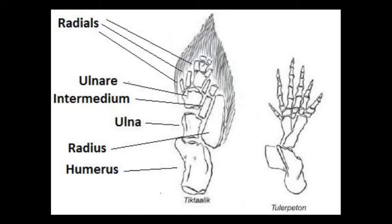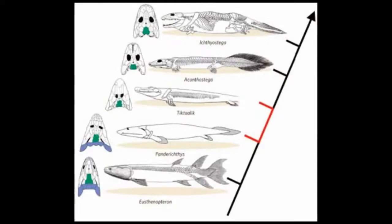Even more interestingly, Tiktaalik has sturdy ribs for pumping air and a neck — fish do not have necks. In fish, the skull joins directly to the shoulders. So, using the tools from the fossil record and comparative anatomy, researchers can go to a precise location in the world and find a transitional fossil with the exact features that evolution predicts. Creationism simply can't explain this, and once again, using these fossils, we can construct a phylogenetic tree.